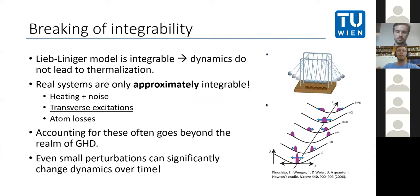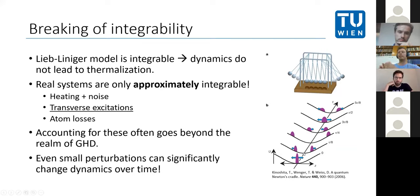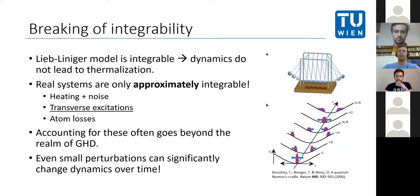The Lieb-Liniger Hamiltonian is integrable, which means we have very interesting dynamics. This is most famously demonstrated in the quantum Newton's cradle: a 1D Bose gas in a longitudinal confinement receives two large opposite momenta via a Bragg pulse sequence, causing the cloud to split into two smaller clouds that climb up the sides of the confinement, turn back, and collide again. Owing to integrability, these collisions can persist for hundreds of periods under good experimental conditions.